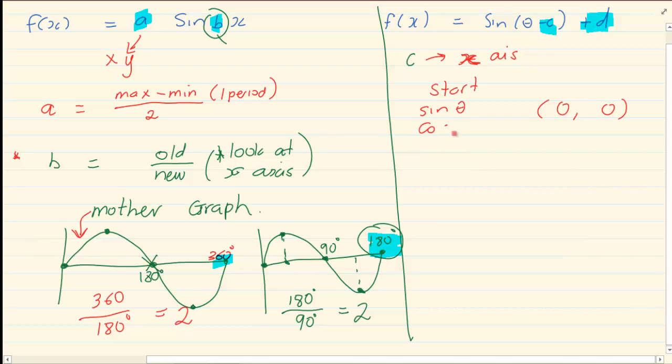The starting point of a sin graph is 0 and 0. The starting point of a cos graph is 0 and A. Now when I am referring to A, I am specifically referring to this part here. That is the starting point of a cos graph. And the starting point of a tan graph is 0 and 0.